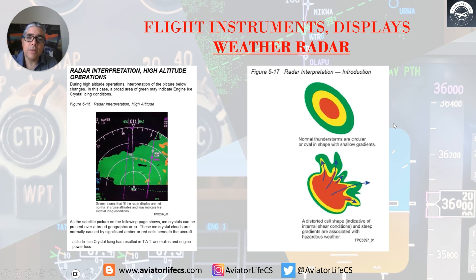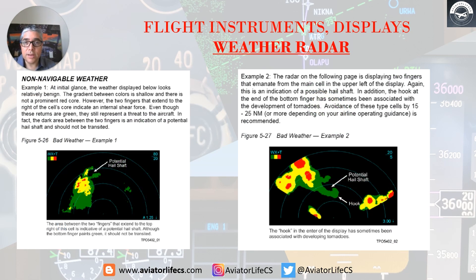Normal thunderstorms are circular or oval in shape with shallow gradients. A distorted cell shape indicative of internal shear conditions and steep gradients is associated with hazardous weather. In the first example, the area between the two fingers that extend to the top right of the cell is indicative of a potential hail shaft. Although the bottom finger paints green, it should not be transited. In the second example, the two fingers again indicate a possible hail shaft.